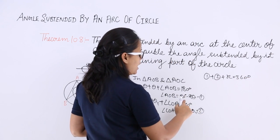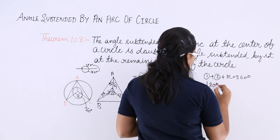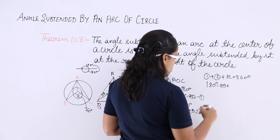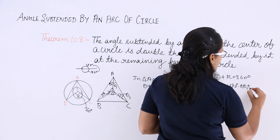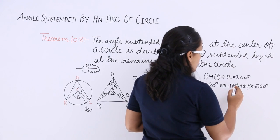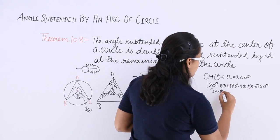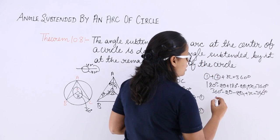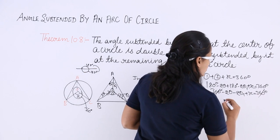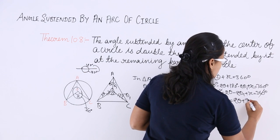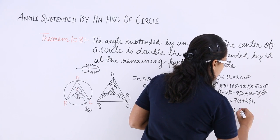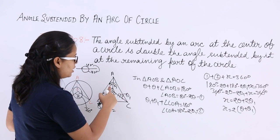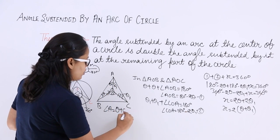Substituting: (180° − 2θ) + (180° − 2θ1) + X = 360°. This gives 360° − 2θ − 2θ1 + X = 360°. The 360° terms cancel, so X = 2θ + 2θ1. Therefore X = 2(θ + θ1). The angle at A is θ + θ1, which is the sum of both base angles.